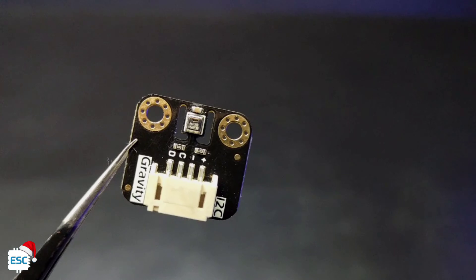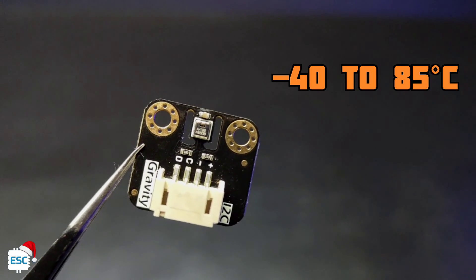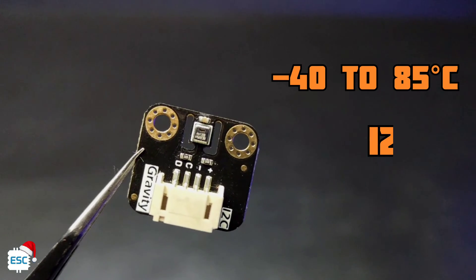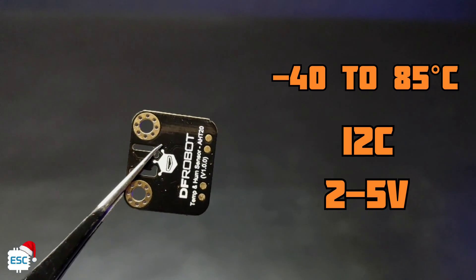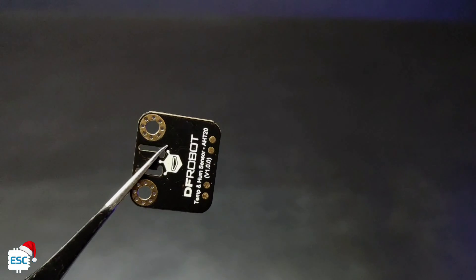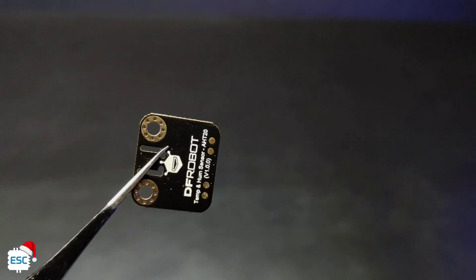We can measure minus 40 degrees Celsius to 85 degrees Celsius with this sensor. It uses I2C communication. The operating voltage of this sensor is 2 to 5V. You can find more details about this sensor from DFROBOT site. Link is given in the video description.